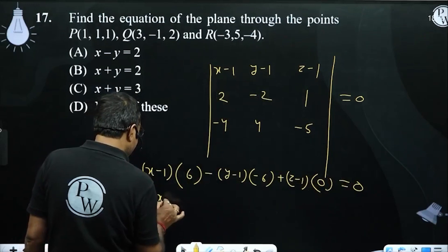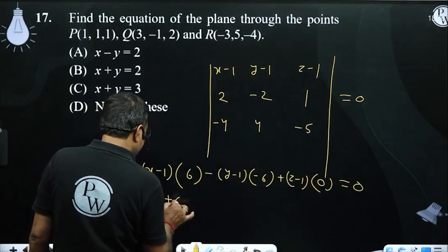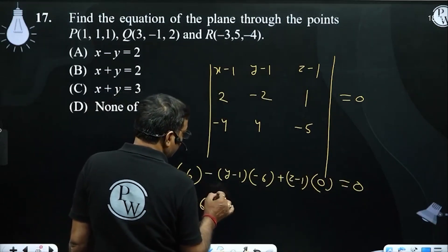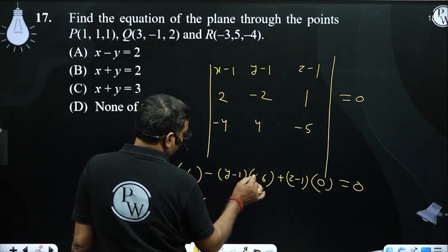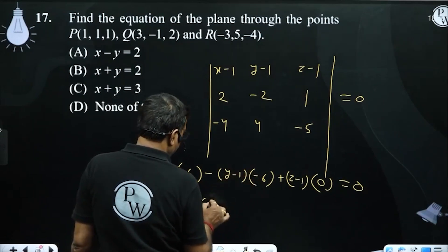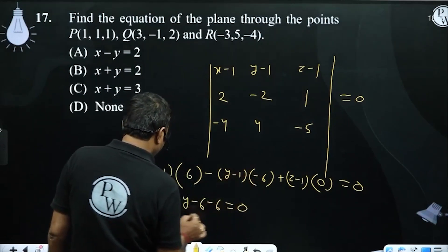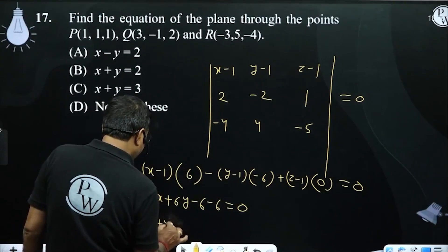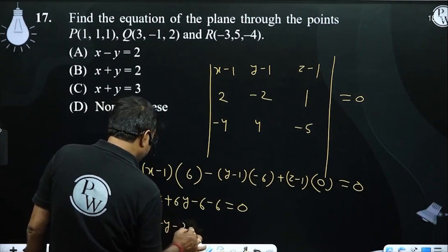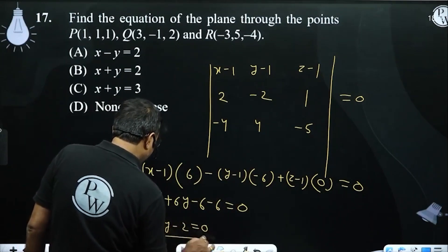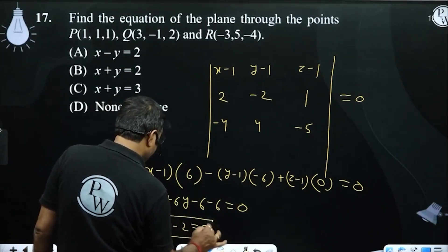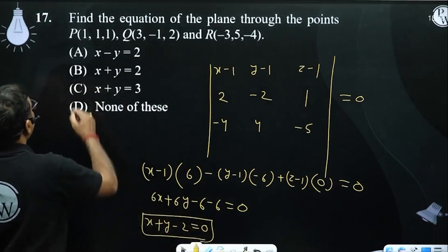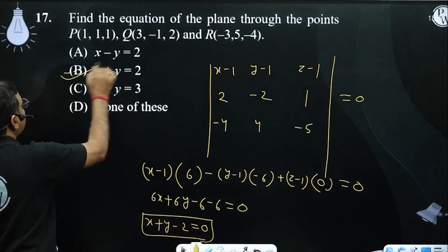The result is x plus y minus 2. Therefore x plus y minus 2 equals 0, option B is correct.